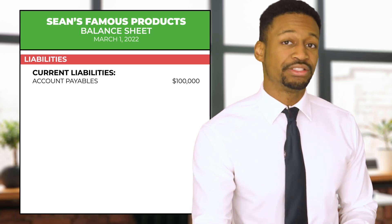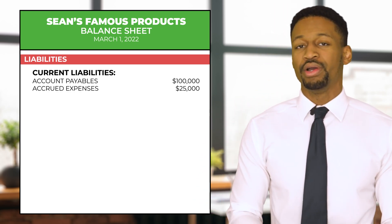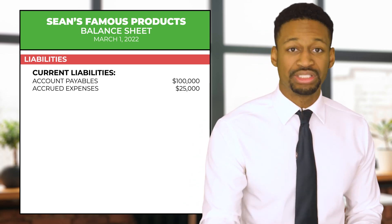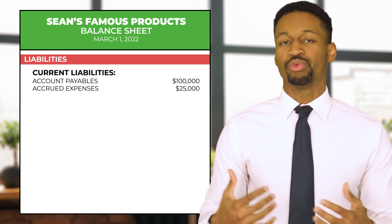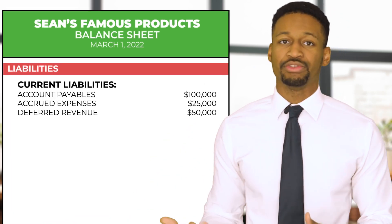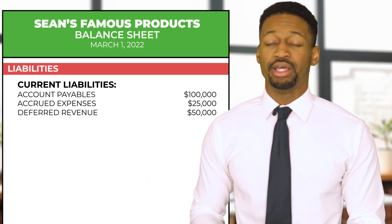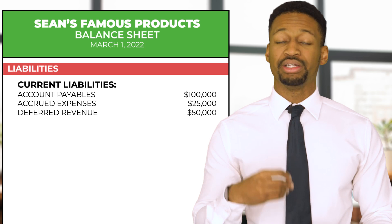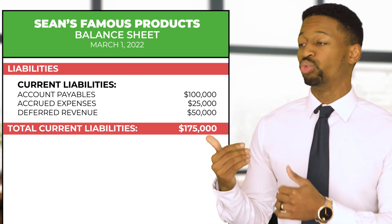We also have accrued expenses of $25,000 — these are expenses you know you have but haven't been fully accounted for yet, like invoices that haven't been received. Accrued expenses are based on the accrual principle, which states you must accrue for invoices not yet received. Another example is deferred revenue of $50,000 — prepayments from customers where services or goods haven't been delivered yet, recorded as a liability because the company must deliver to fulfill that obligation. This brings total current liabilities to $175,000.